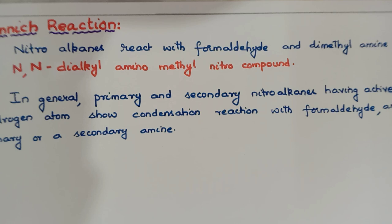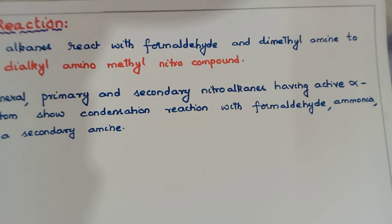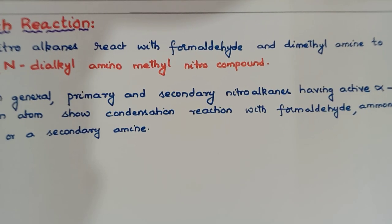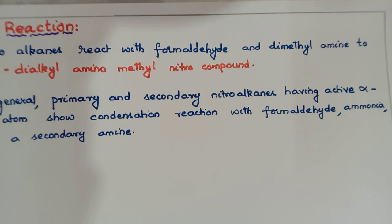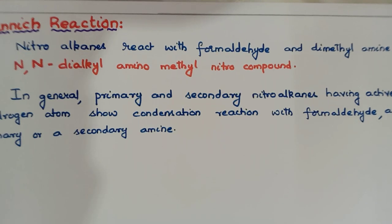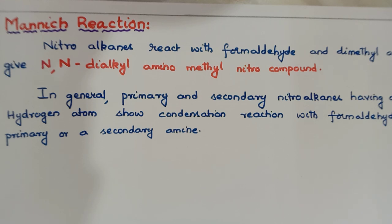Generally, the statement goes like this: primary and secondary nitroalkanes having active alpha hydrogen atoms condense with formaldehyde, or ammonia, or primary or secondary amines. This is the statement of the Mannich reaction. Now let us learn the mechanism of this reaction.